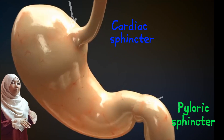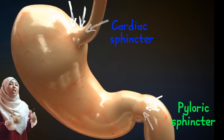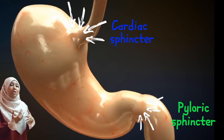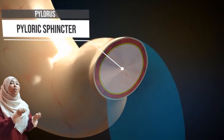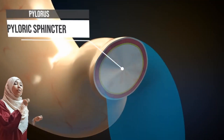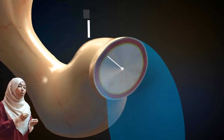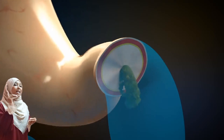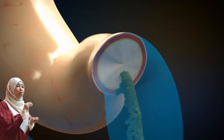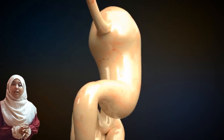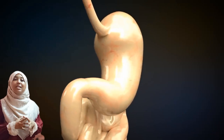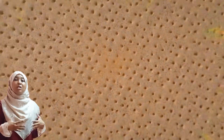On the other end we have the pyloric sphincter. When digestion is complete in the stomach, the pyloric sphincter relaxes to allow food into the first part of the small intestine, and that is the duodenum. Once food is in the stomach, it stimulates the stomach walls to secrete gastric hormone.